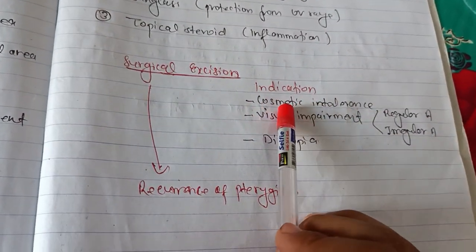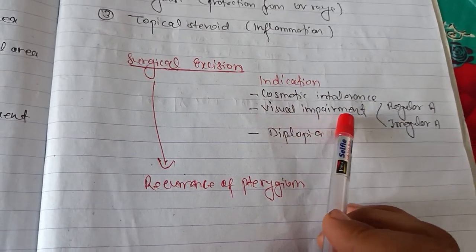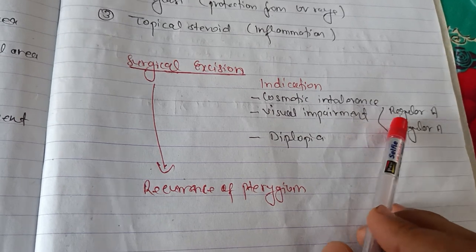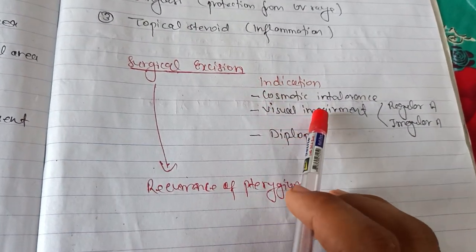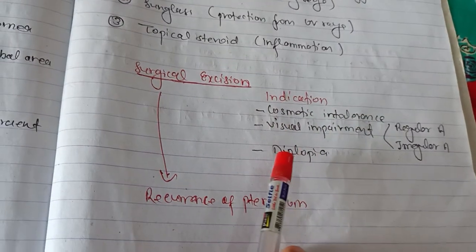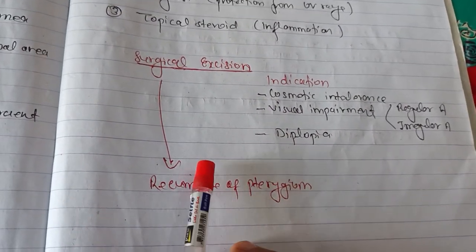There is surgical excision. What are the indications? Cosmetic intolerance, visual impairment mainly due to regular astigmatism and irregular astigmatism, diplopia, and recurrence of pterygium.